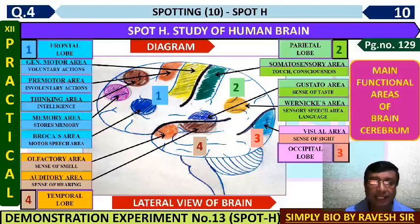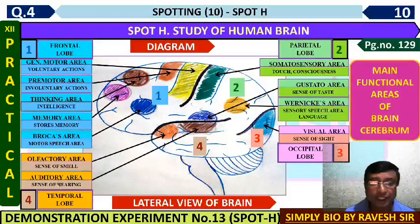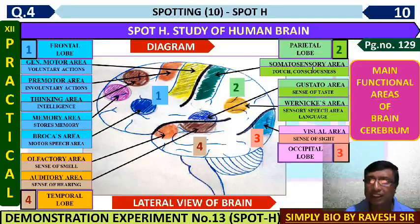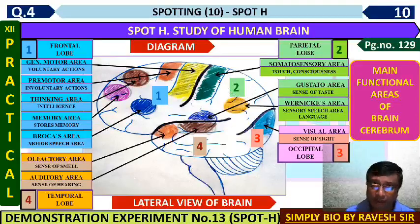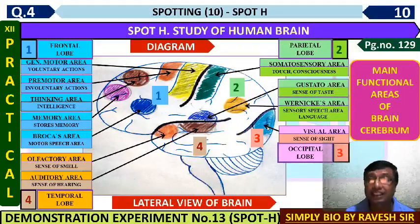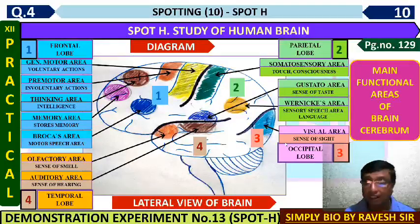In the temporal lobe - the side lobe - there is the auditory area shown in orange color. In the parietal lobe there is the somatosensory area which controls touch and consciousness, and the gustatory area for sense of taste. Then there is the Wernicke's area - the sensory speech area. In the occipital lobe there is the visual area - the sensory area for vision, the sense of sight. If a specific part has been asked, you can write accordingly.